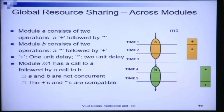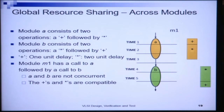We will see the resource sharing problems that exist when we consider not only a single operation constraints graph, but different operation constraints graphs across modules. Within a single operation constraints graph there are no control statements, no mutually exclusive operations, no branches and no loops. However, when we consider resource sharing across modules, we need to also consider the control flow structure, the loops, and the branches in those modules.